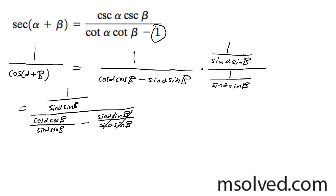You can rewrite these as cosecant theta, cosecant beta. And this becomes cotangent alpha and this becomes cotangent beta.